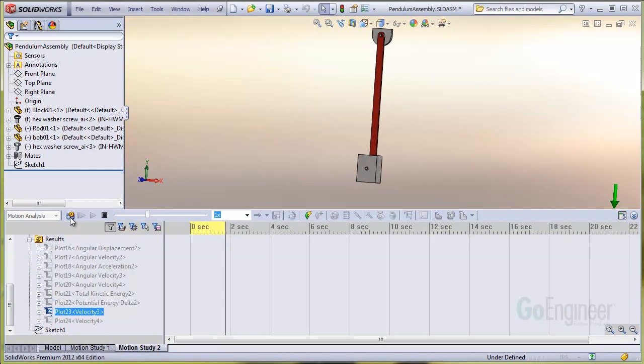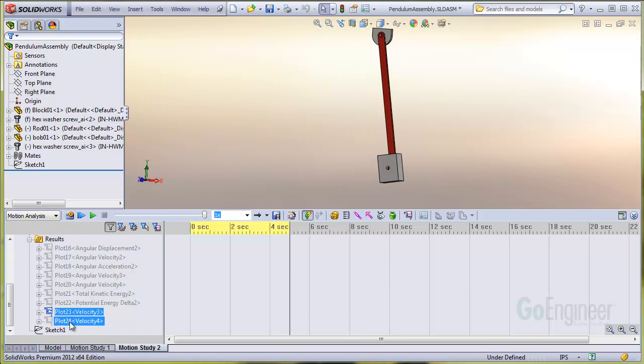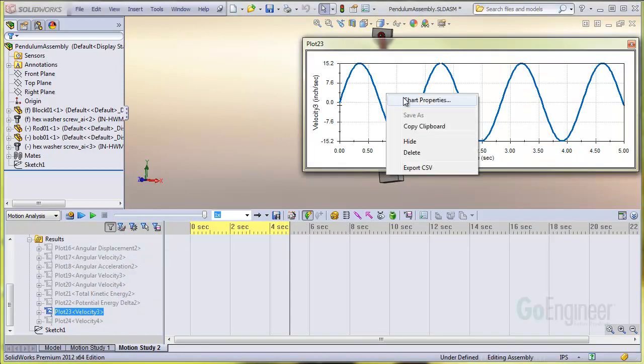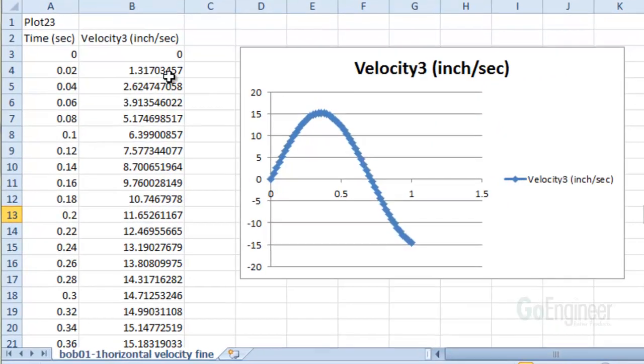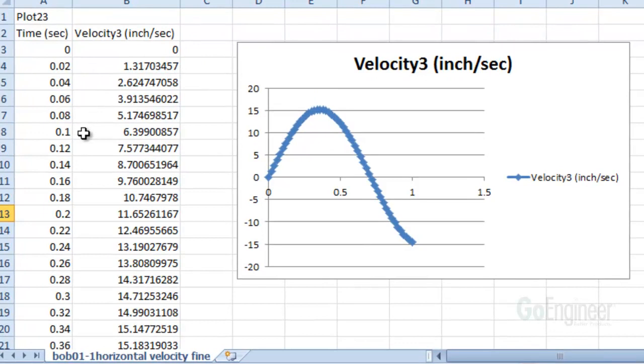You can see it takes longer to run than before. I'll show the horizontal velocity graph and export that to a CSV file and open it into Excel. In Excel, you can see the time step has been reduced to 20 milliseconds.